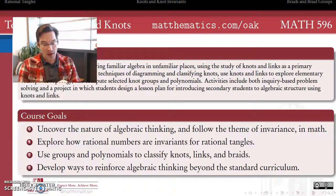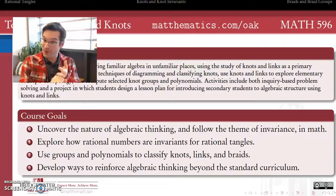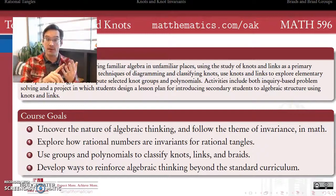Probably the goal that's going to take us the most time is goal number two: to be able to use groups — in the abstract algebra sense — as well as polynomials, also in the abstract algebra sense, to not only represent but in fact classify types of knots, types of links, and types of braids. That's going to be a large portion of what we do this semester.